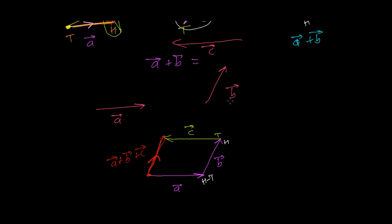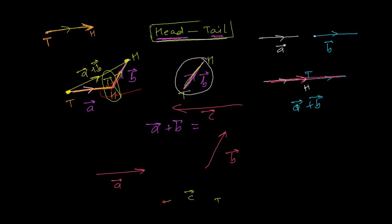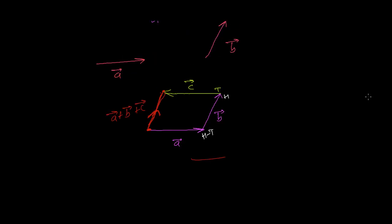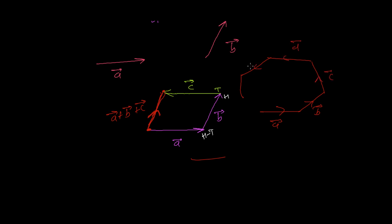No matter how many vectors we have, the approach is the same. I showed two vectors, then three vectors. If there are six vectors — A, B, C, D, E, and F — you connect them head to tail in sequence. Then the sum of all vectors is represented from the starting point to the finishing point of the journey, giving you vector A plus B plus C plus D plus E plus F.